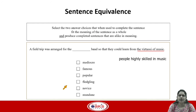Now let's look at the sentence. The sentence says a field trip was arranged for some kind of a band so that they could learn from the virtuosi of music. The virtuosi of music are people who are skilled in music. So if they are skilled in music, what kind of band would want to learn from them? It must be someone who is a beginner, so we want an option which means beginner.